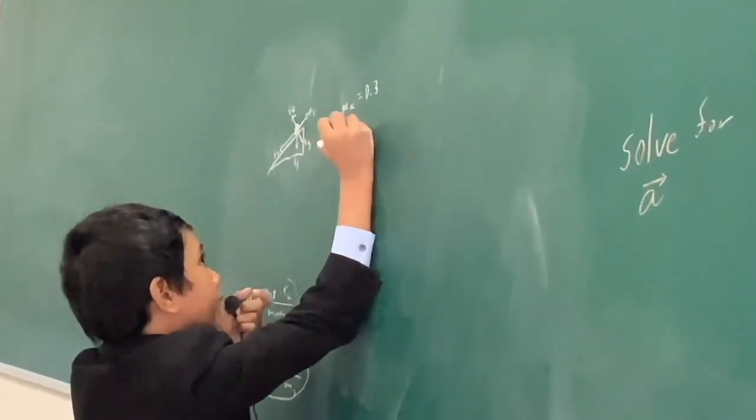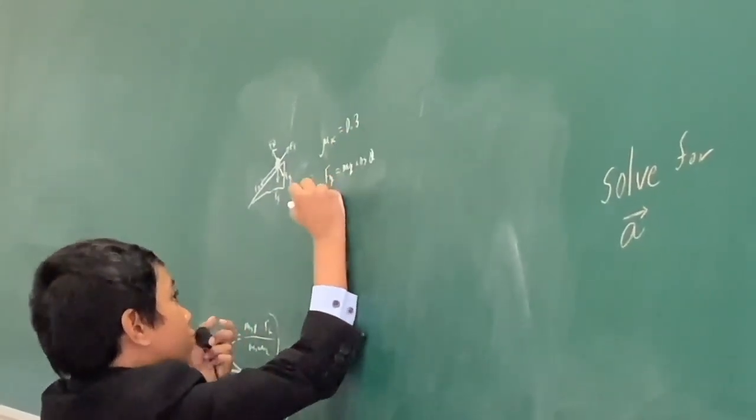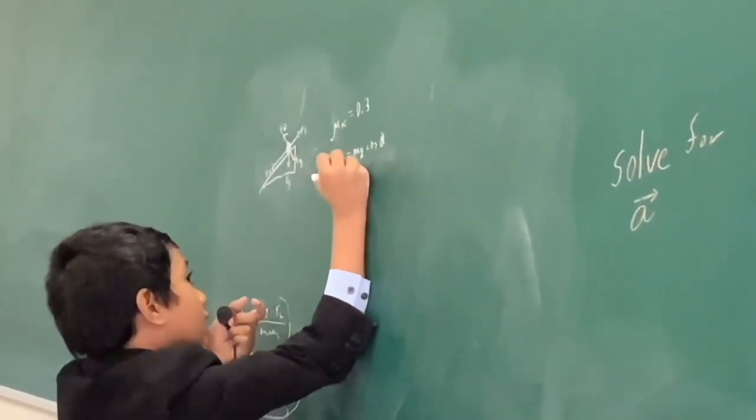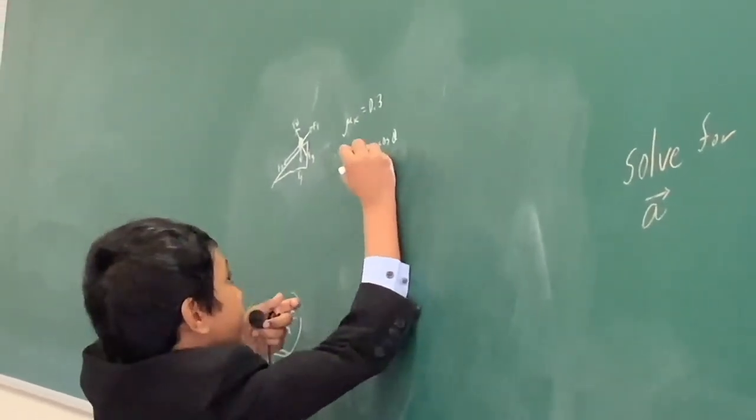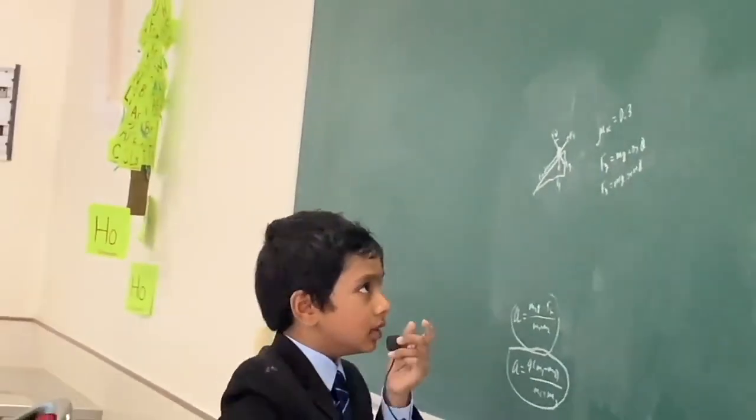All right, so now these are the four forces, or if you count that fd I drew, five. And so now we have mu k and so we know that fd perpendicular is mg cosine theta, which is fd cosine theta. And we have fd parallel which is mg sine theta or fd sine theta.